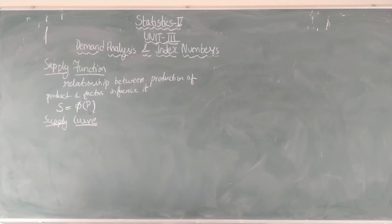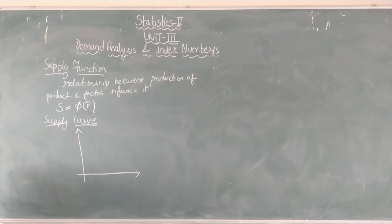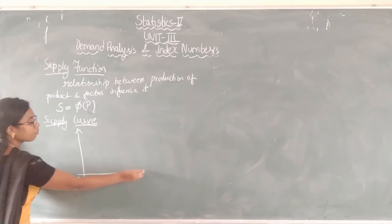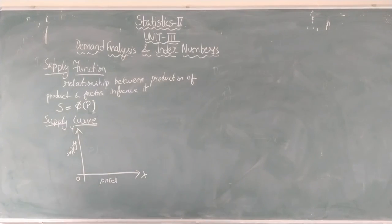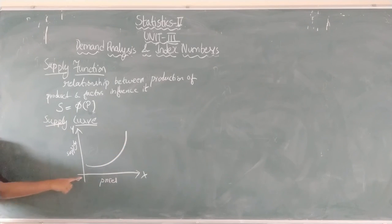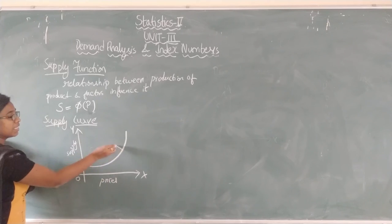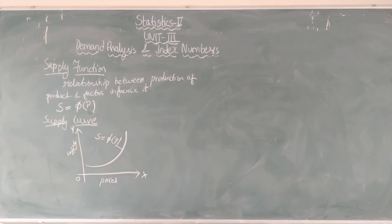Similarly, for the supply function you can draw the supply curve, which is a graphical representation where supply is taken along the Y axis and prices are taken along the X axis. Supply and price have a direct relationship — if price increases, supply increases. So the supply curve shows an upward trend from left to right. This is represented as S equals phi of P.